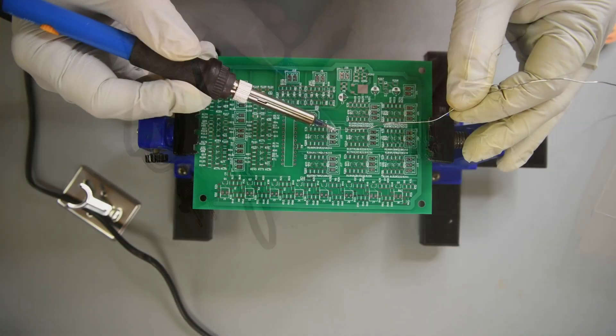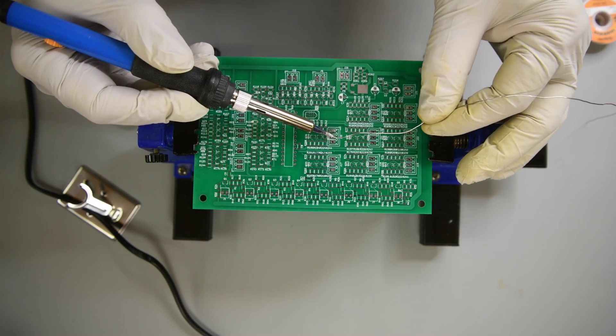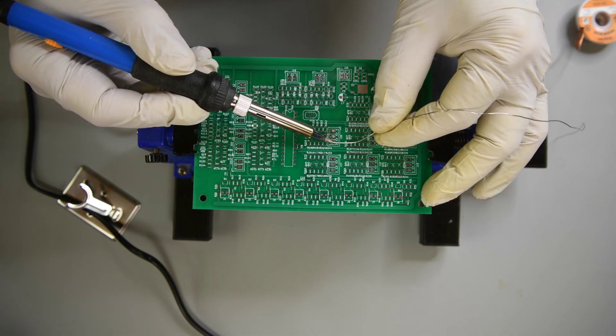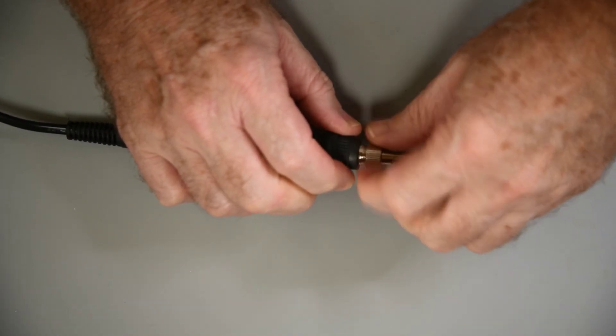It does get hot, it will melt solder, and it is somewhat of an adjustable temperature soldering iron. So it is kind of amazing that it can be bought for somewhere between $7 and $8. But what could possibly be inside it to sell for such a tiny amount?